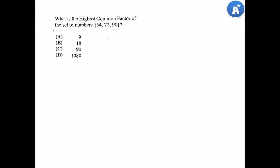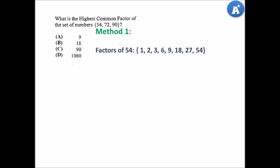There are two methods we can use to solve this question. Let's look at the first one — Method 1. Factors of 54 include 1, 2, 3, 6, 9, 18, 27 and 54.